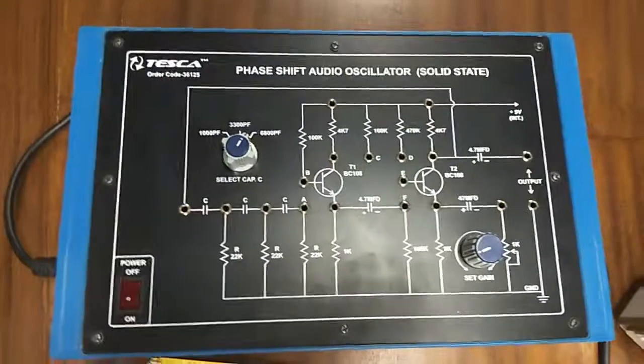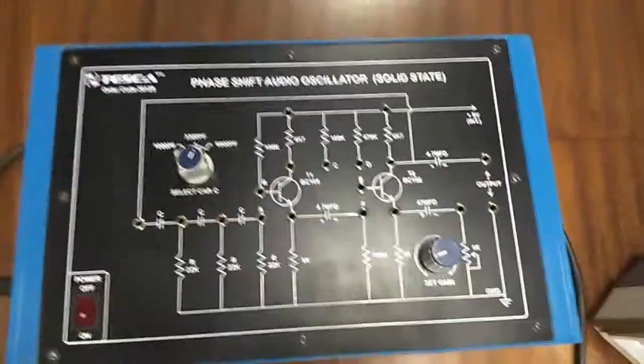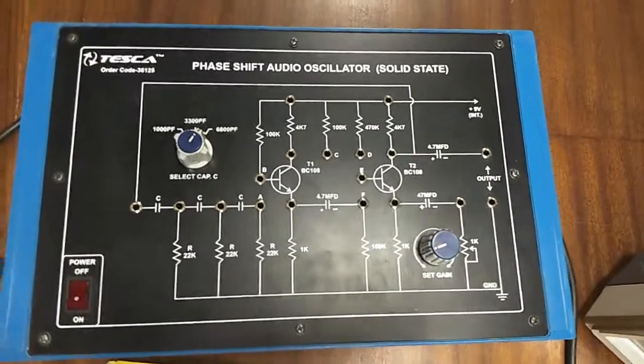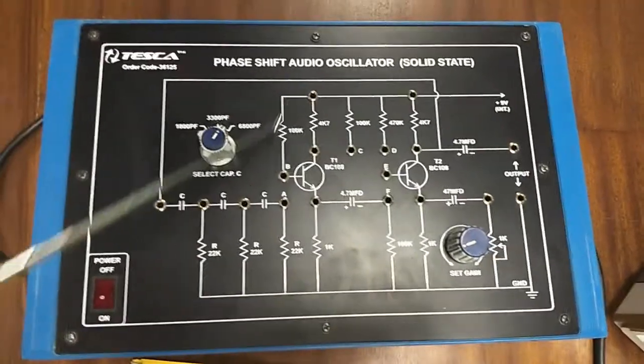Today we are going to show you our phase shift audio oscillator trainer kit, order code 36125. Manual and pass are included in this case. So this is the trainer kit and this is the circuit.